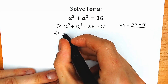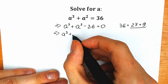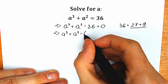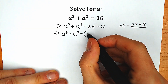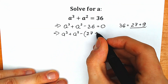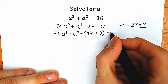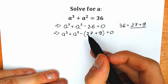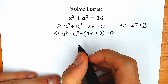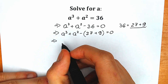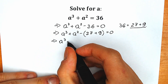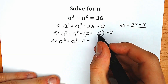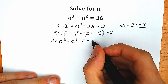So as a result, we have a cube plus a square minus, inside parenthesis, 27 plus 9. We just changed this 36 by 27 plus 9. Right now, let's open the parenthesis. So we have a cube plus a square minus 27, and of course not plus 9, but minus 9.